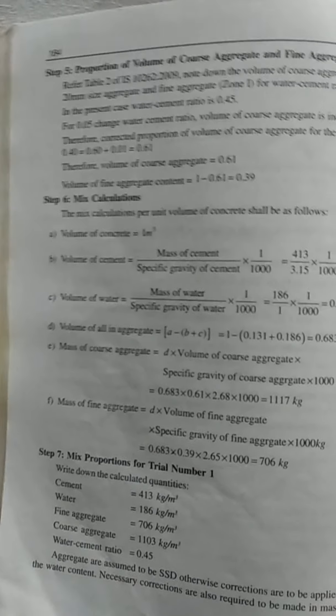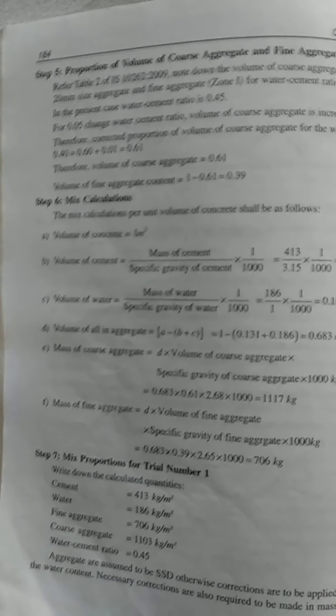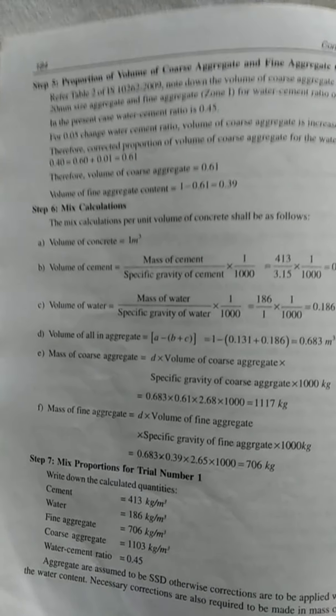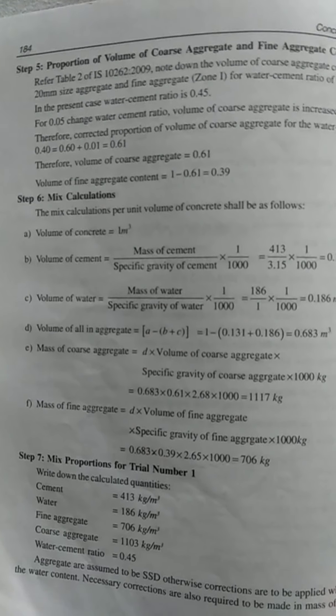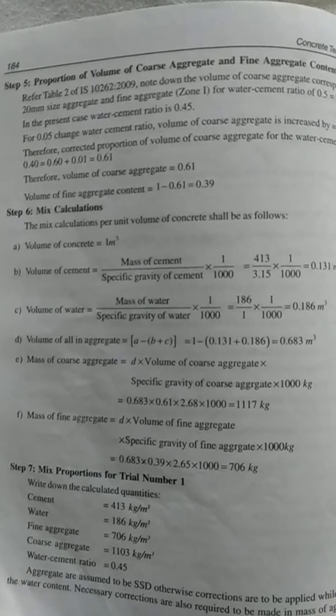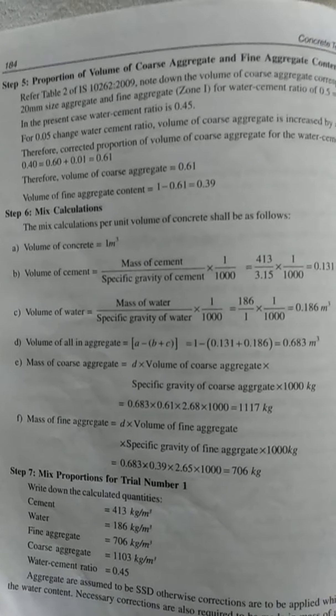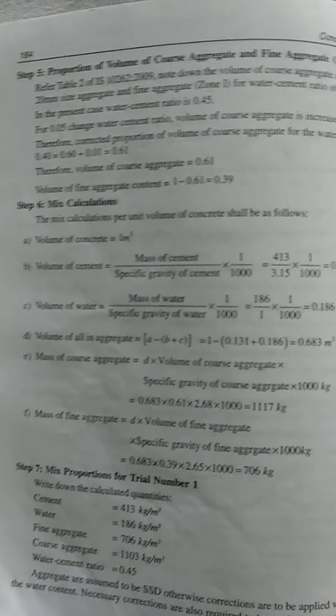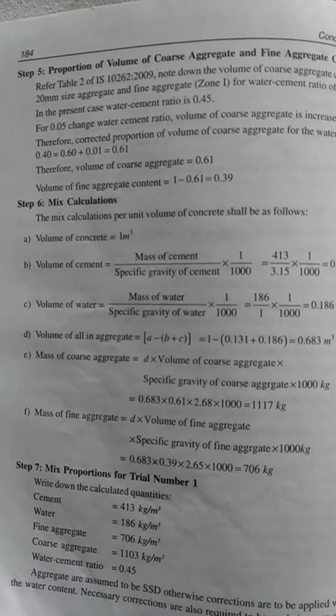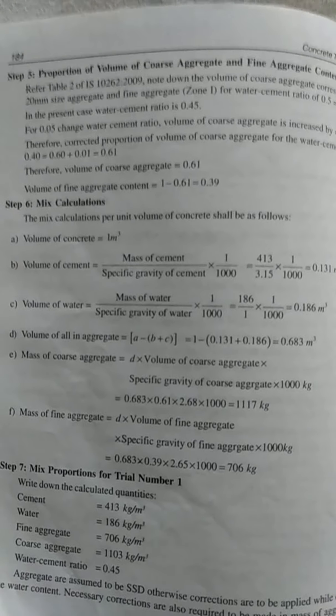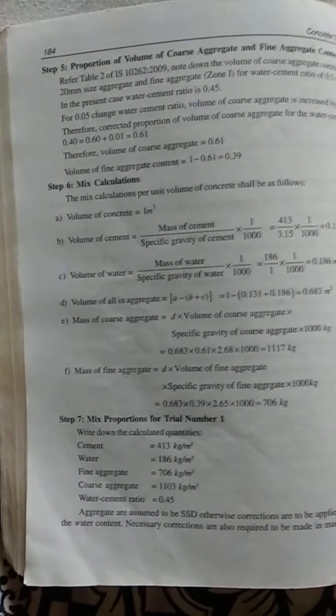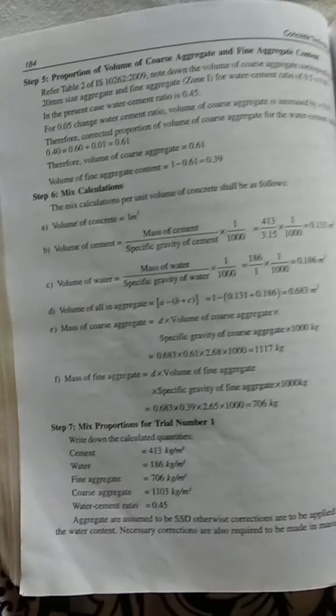All these steps are already given in IS 10262:2009, which has been shared with you. Refer to that code book and solve following the steps provided. A similar solved problem is already in the code book — only the numerical values change, so substitute accordingly and find the cement content, water content, fine aggregate, and coarse aggregate. This completes Module 4 on mix design. Thank you.